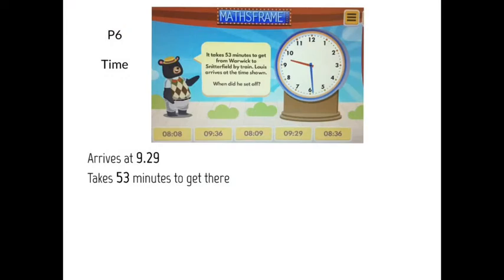This term in Primary 6, we're also going to be looking at time. Here we have a worded question for us to answer. The question says, it takes 53 minutes to get from Warwick to Snitterfield by train. Louis arrives at the time shown. When did he set off? The first thing you would do here is identify what time is being shown on the analogue clock, which is 9:29. Always write down how long it has taken to get there as well.